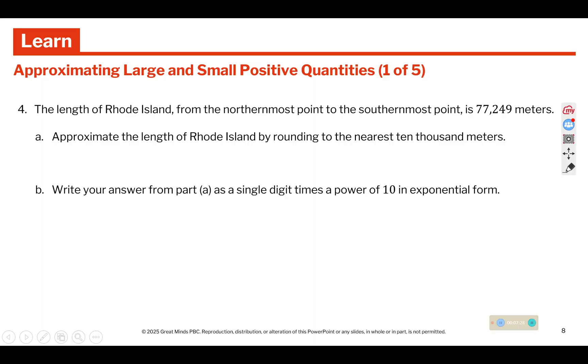The length of Rhode Island from the northernmost point to the southernmost point is 77,249 meters. Approximate the length of Rhode Island by rounding to the nearest 10,000 meters. So is this closer to 70,000 or 80,000? 80,000. 77 is closer to 80 than to 70. And now we're going to write it as a single digit times 10 with an exponent. Well, the 8 is followed by 4 place values, so we use the exponent of 4.